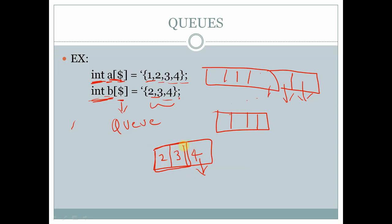There will be only two memory locations. If we remove 3, the size of the queue will be automatically decreased. And if we insert two more elements to this queue, then the size of the queue will be automatically expanded.